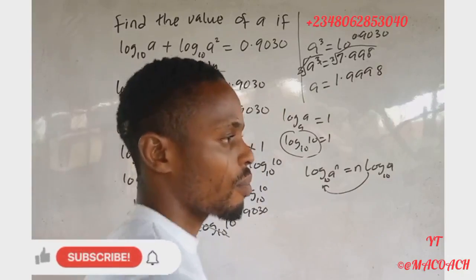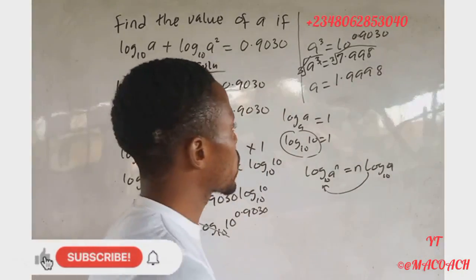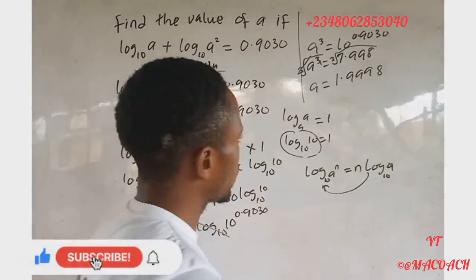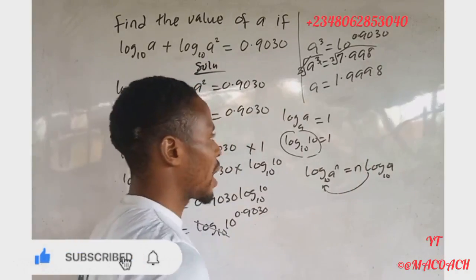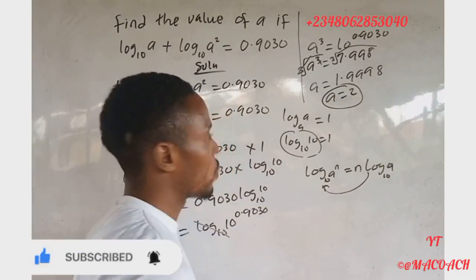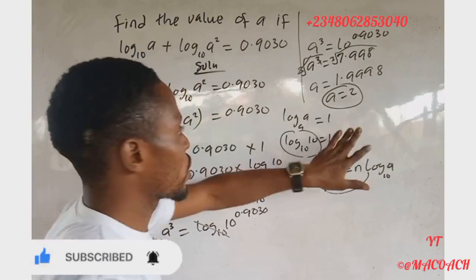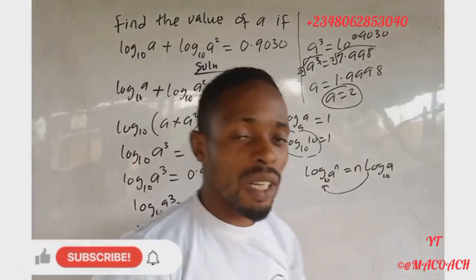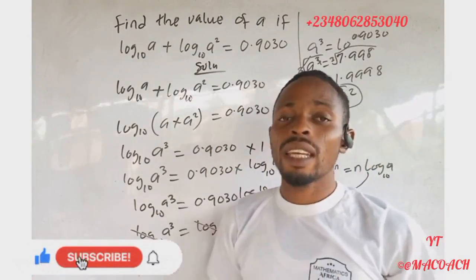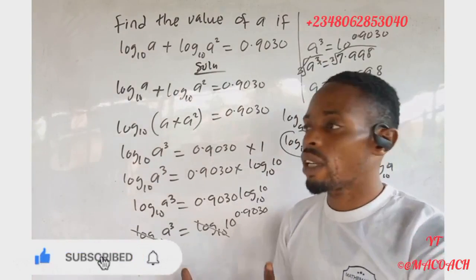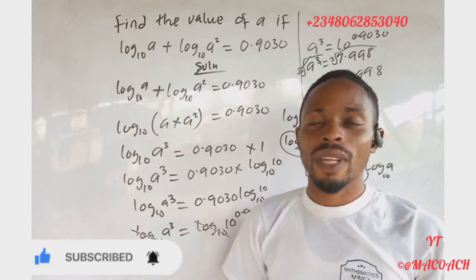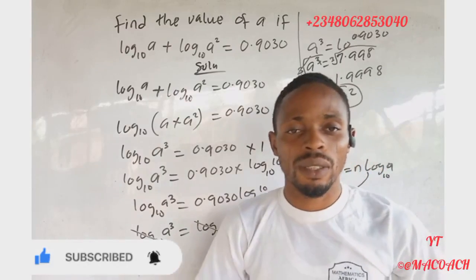You can leave it like this, or round to a whole number. So the answer is a is approximately equal to 2. Therefore, the value of 'a' in this question is approximately 2. I hope you understand this video. Don't forget to subscribe, like, hit the notification button, and thank you — God bless you all.